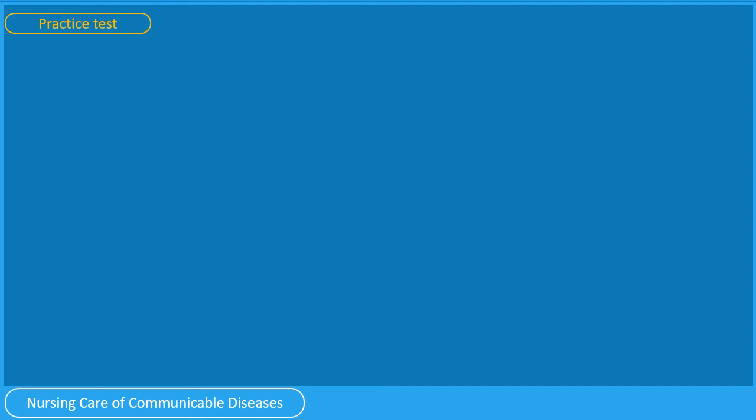Pause this video, gather your thoughts, and when you are ready, let us have a practice test. Question 1: Used gloves should be placed in which waste bin? A. Yellow, B. Green, C. Black, D. Orange. You have 5 seconds. Used gloves are infectious waste; therefore, the answer is A. Yellow.